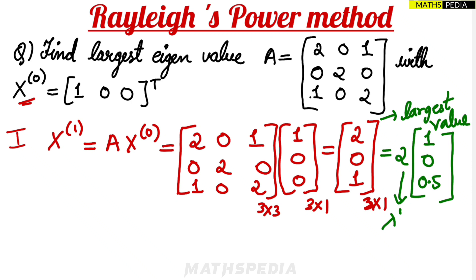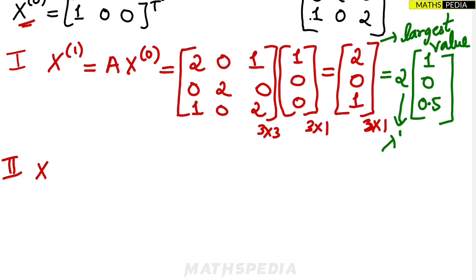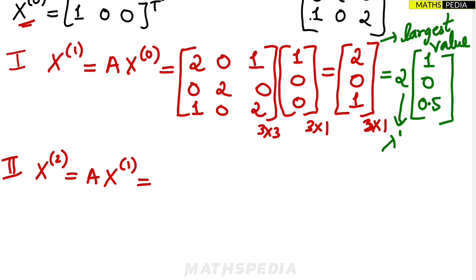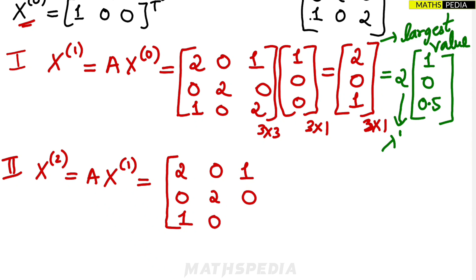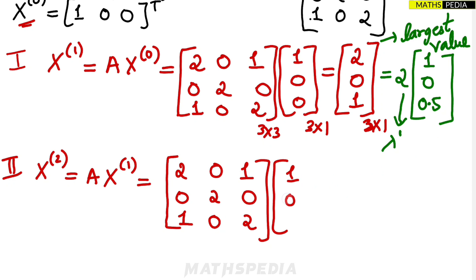This is not the final value; we need to do further iterations. For the second iteration, we find x^2 = A × x^1, where x^1 is now [1, 0, 0.5] — the normalized vector left after factoring out the largest value in the previous step.